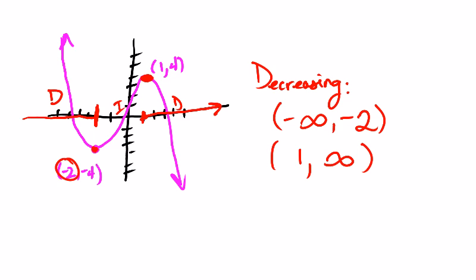And then the increasing interval is only one of them. And the increasing interval goes from the x value of negative 2, and then it goes to positive 1. And that's how you would do increasing and decreasing intervals of a polynomial function. Have a good day.